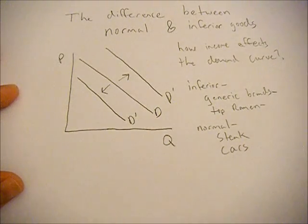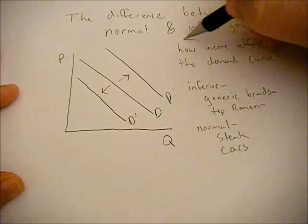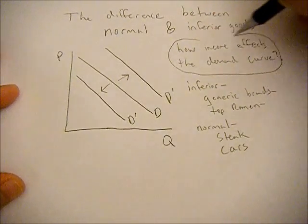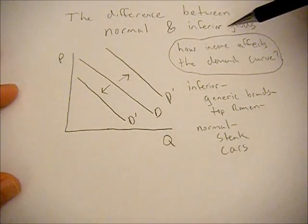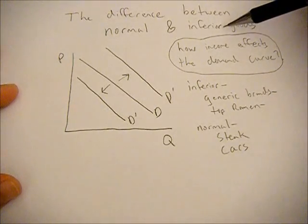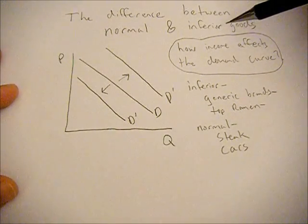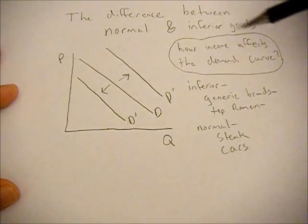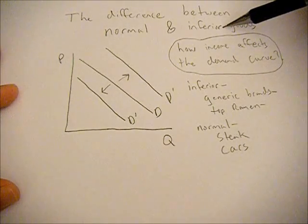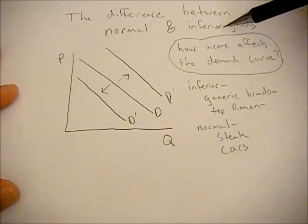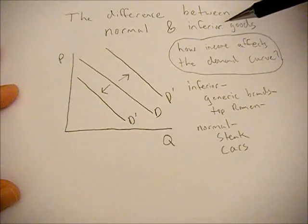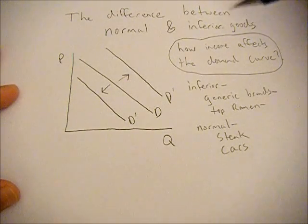So the trick to remembering these two is how income affects the demand curve. If it's inferior, remember the intuition behind it. The good is inferior, you don't really like it, you have to consume it because you're poor. So if you have an increase in income, you're not going to consume as much of that good. You're going to substitute away to other goods.